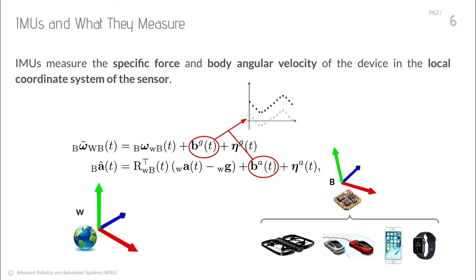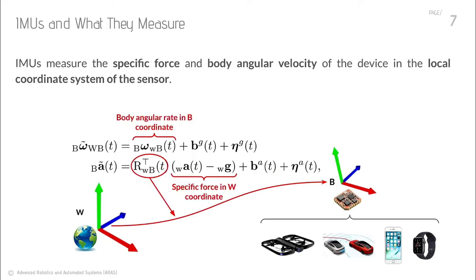The more challenging source of error is the time-varying offset in the measurements. This offset changes with time and depends on temperature and the age of the device, and may not be compensated for by a one-time calibration routine. It is also important to note that the measurements are represented in the sensor's local coordinate frame. The rotation matrix from the world to the body coordinate in the measurement model transforms the sum of gravity and motion-induced accelerations from the world coordinate system to the sensor frame.